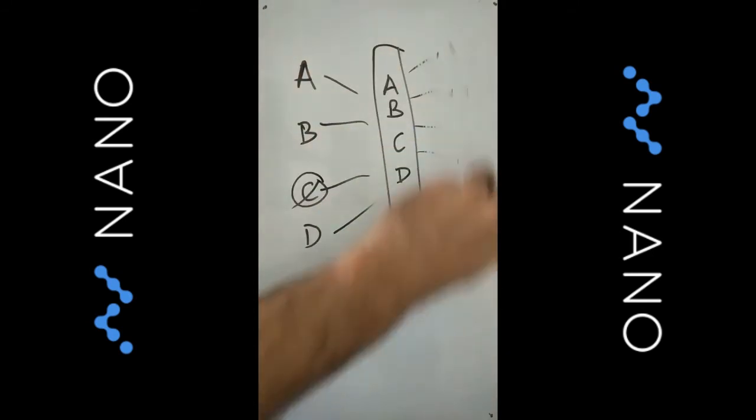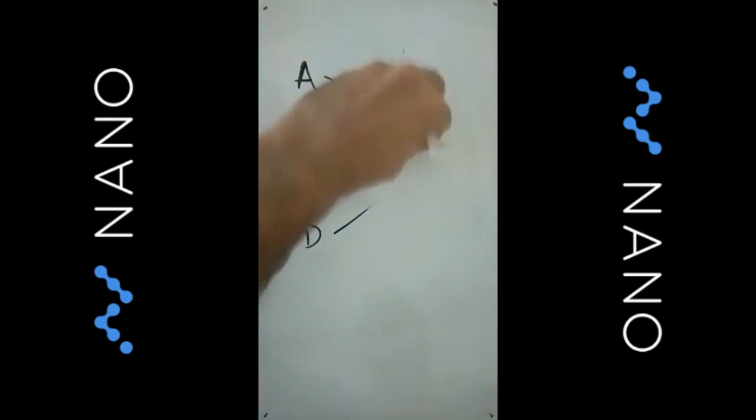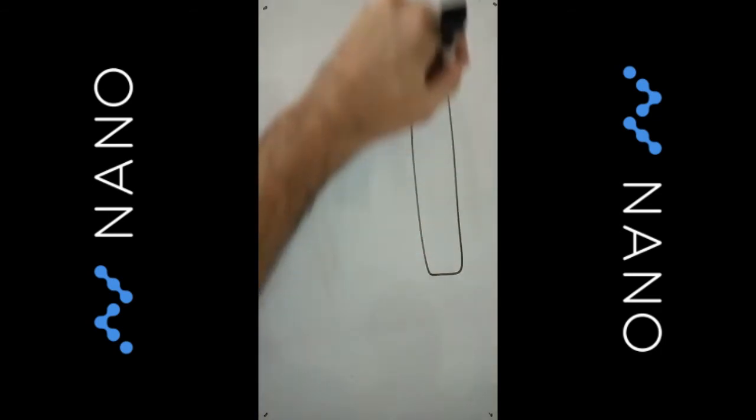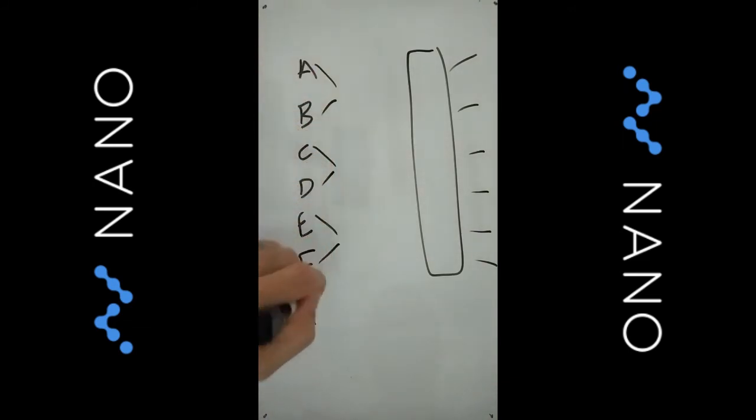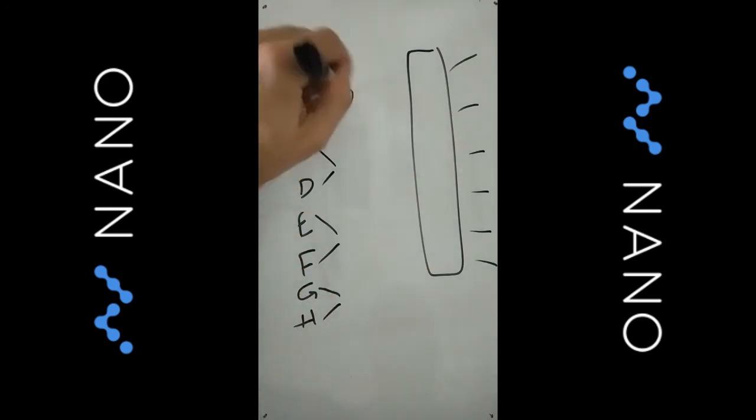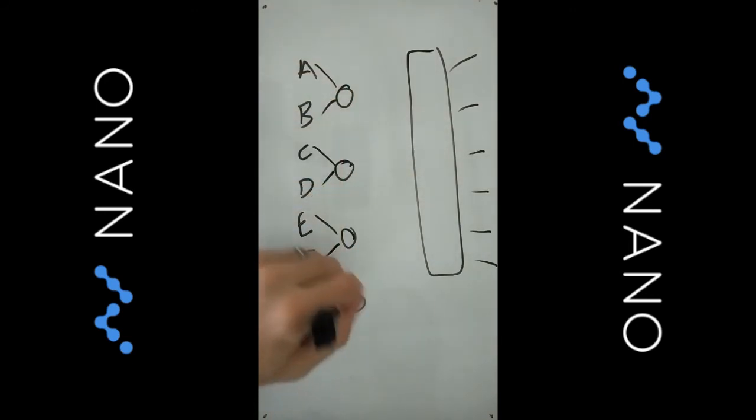Well the solution to that is actually to have a binary tree of two person joint accounts or two signature joint accounts and that looks something like this. We have our big mix count that we're trying to get into with all our outputs. We have A, B, C, D, E, F, G and H and they do a binary tree like this of these intermediate joint accounts.